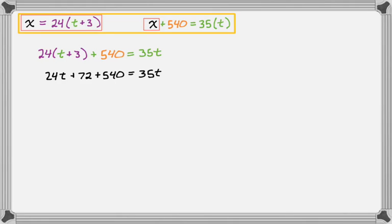So 24T plus 72 plus 540 equals 35T. Move everything with a T to one side. Everything without a T, leave on the same side. So I get 612 is 11T. So T is 612 over 11. That's hours. And if you remember, that's when train B gets to the city.